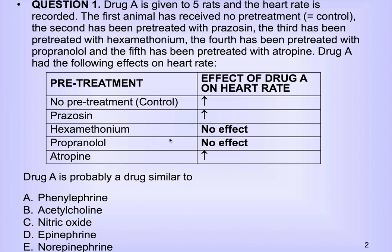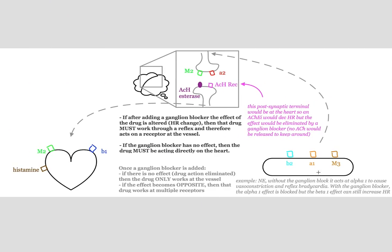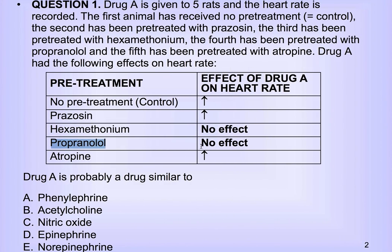Then we check the next one — propranolol. We know that is a non-selective beta blocker because it's in the second half of the alphabet. So that means it's blocking beta-2 or beta-1. Either way, we know it can't be the beta receptor we're dealing with, because propranolol causes no effect on this magic drug. So that means we're left with checking out what atropine does.